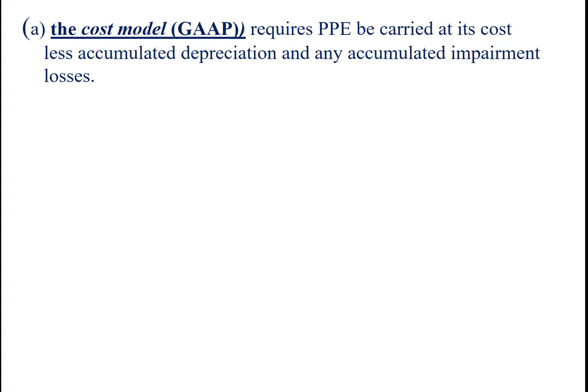The cost model requires PP&E be carried at its cost, less accumulated depreciation, and any accumulated impairment losses. This is what we use under GAAP, and it is the method that we use in the United States.